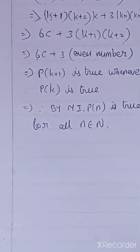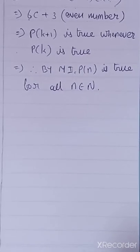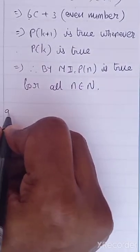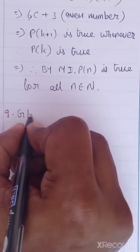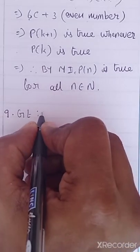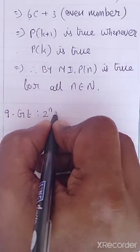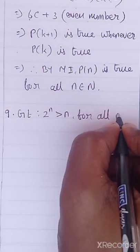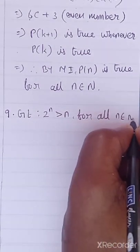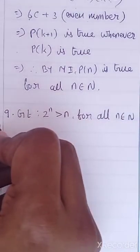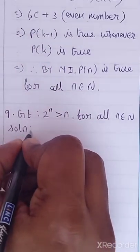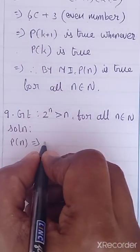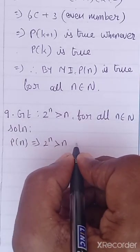Is that clear? Now we can get into the next problem, 9th problem. The question is given that 2 power N is greater than N for all N in the natural numbers. Directly we can get into the solution. What is your first step? Let P of N imply 2 power N greater than N.